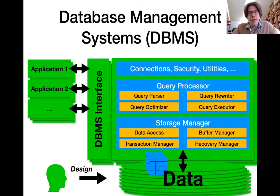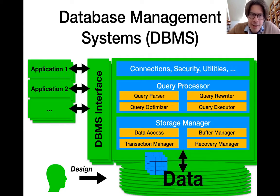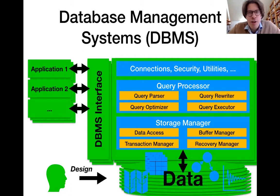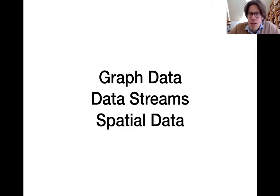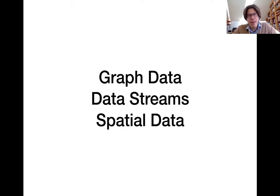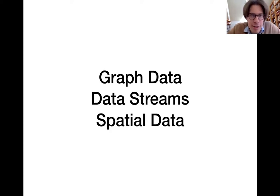In the final part of the course, we're going to broaden our scope beyond relational data. We're going to look at different types of data — for instance, graph data, spatial data, and data streams. And we're going to discuss specific systems that have been tailored in order to store and process those different data types.